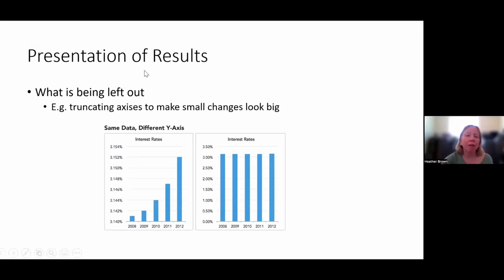Another thing to keep in mind is presentation of results — what's being left out. You can truncate axes to make small changes look big. For example, if the axes go up by really small amounts, it looks like there's been a huge change in interest rates; with a different axis scale, you can see the change is actually very minimal. This kind of presentation can lead people to draw potentially incorrect or misleading conclusions.